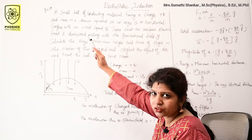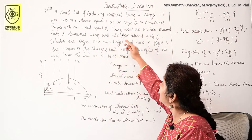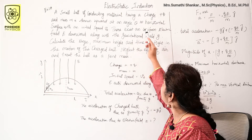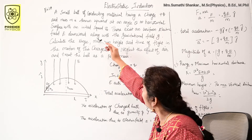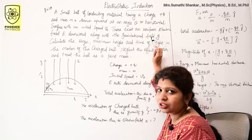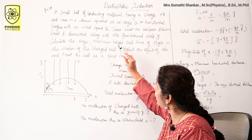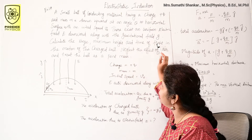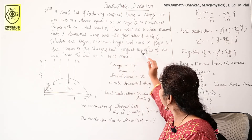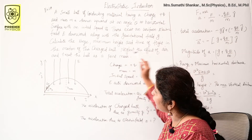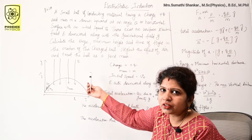The ball is thrown with an initial speed v₀. There exists a uniform electric field E directed downward, along with the gravitational field g. We need to calculate the range, maximum height, and time of flight of this charged ball. Neglect the effect of air resistance, and treat the ball as a point mass.